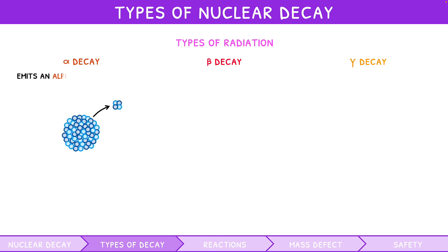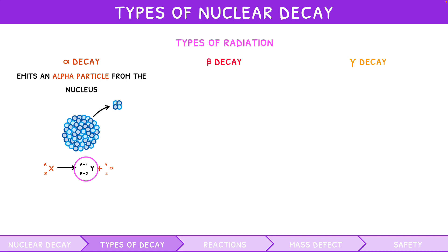Alpha decay emits an alpha particle — i.e., a helium nucleus — from the nucleus. The general equation is given by the initial atom decaying to a new lighter atom plus a helium nucleus. Note how the notation of the new atom reflects the loss of the alpha particle: you subtract 4 from the mass number and 2 from the atomic number of the initial atom. Since an alpha particle is a nucleus, alpha decay has a positive charge, and since it's a large particle, it has low penetration depth.